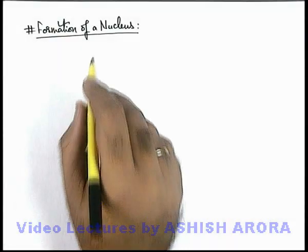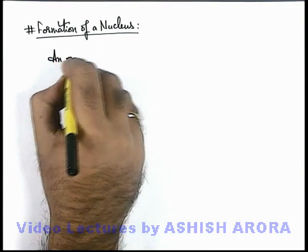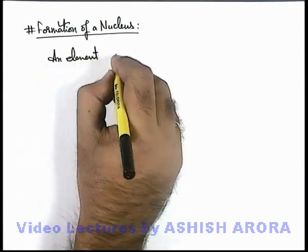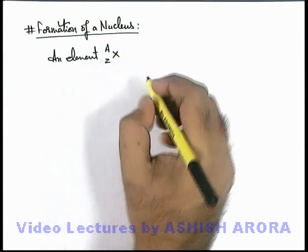Now we'll talk about formation of a nucleus. We can write that an element X, which is having its atomic number Z and mass number A.